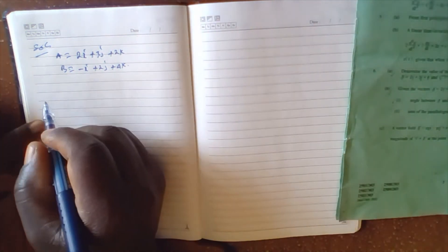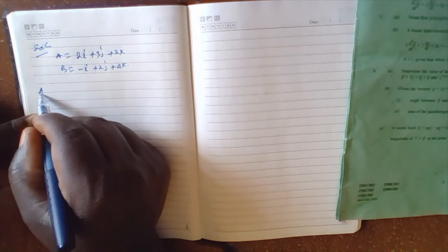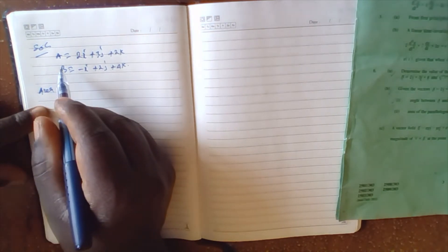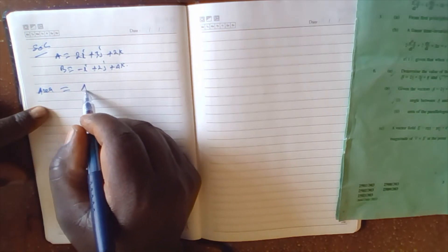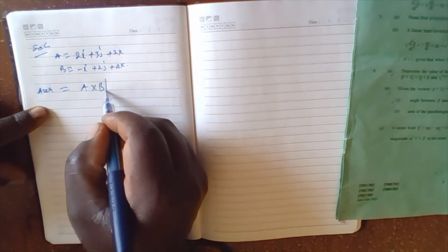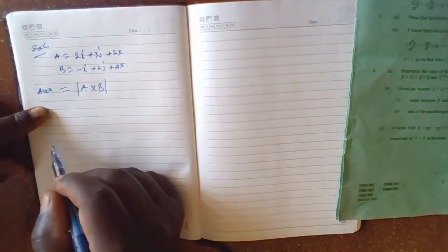The area spanned by these vectors is given by a cross b, then we get its modulus.